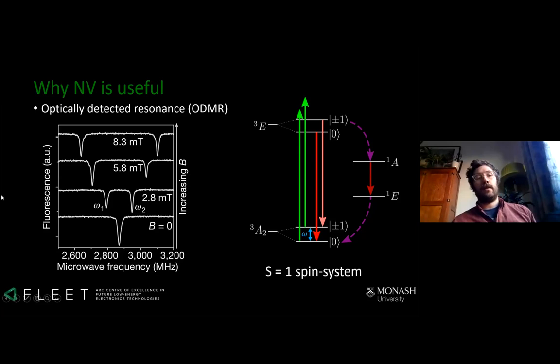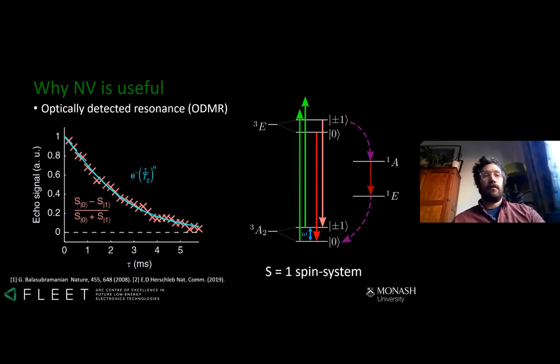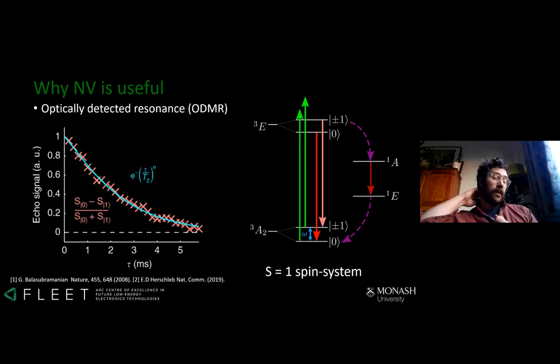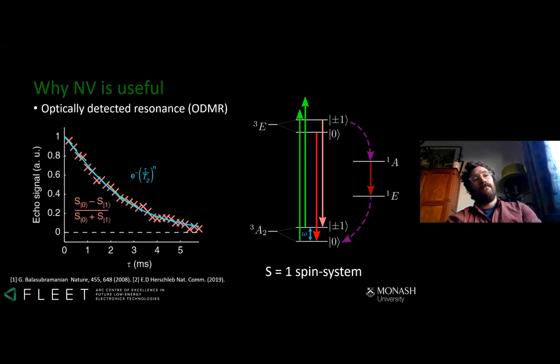The NV center has a really long coherence time. I can prepare a superposition of the ±1 and zero spin levels and it will maintain that superposition for quite a long time, meaning my signal won't decay quickly. This is the longest coherence time of any electron spin in a solid at room temperature — up to several milliseconds in the best case. That's useful for sensing because it means you can acquire a lot of information before your signal decays.